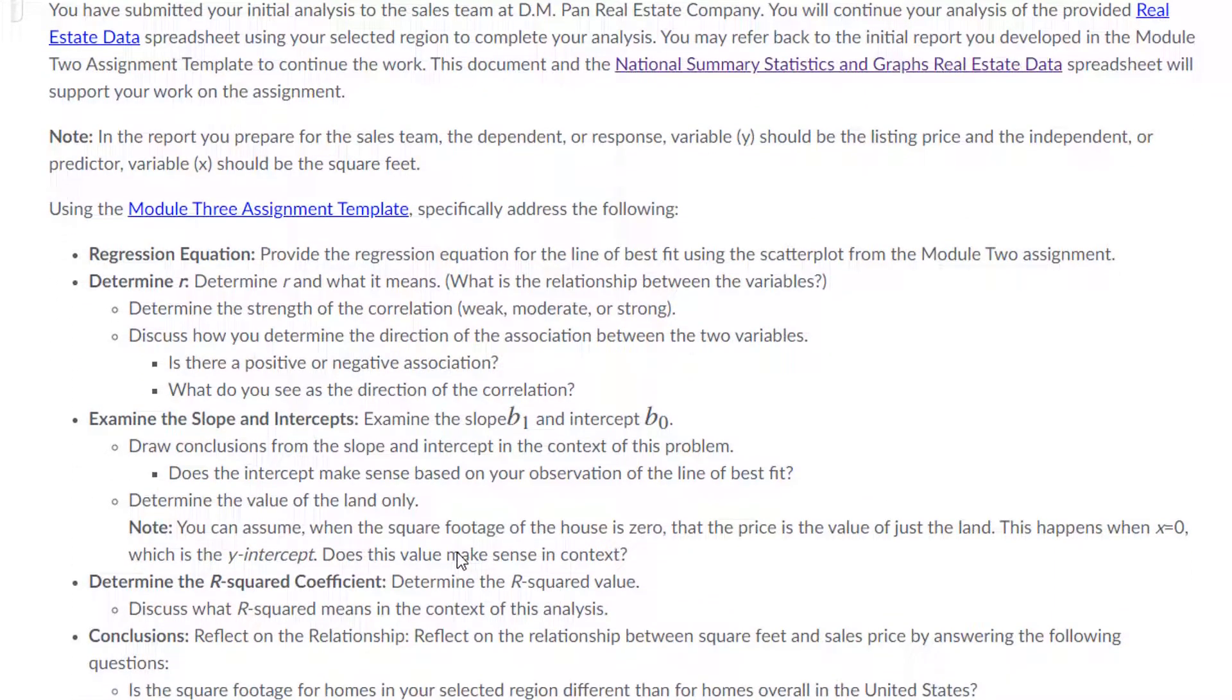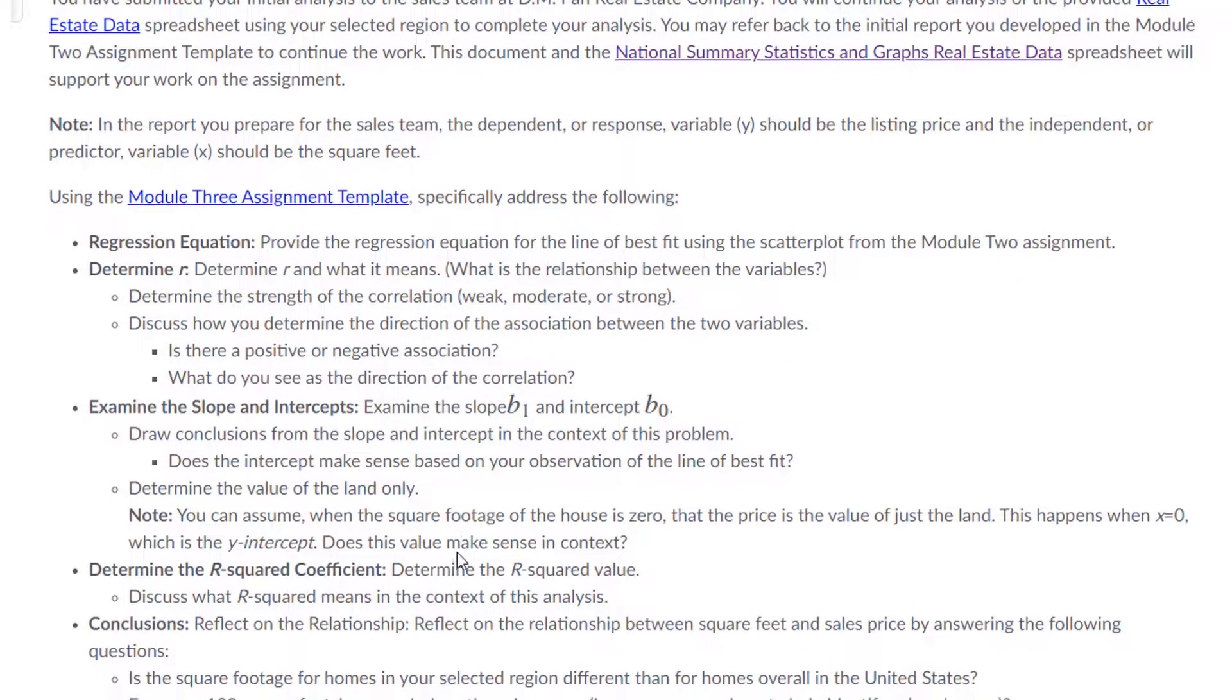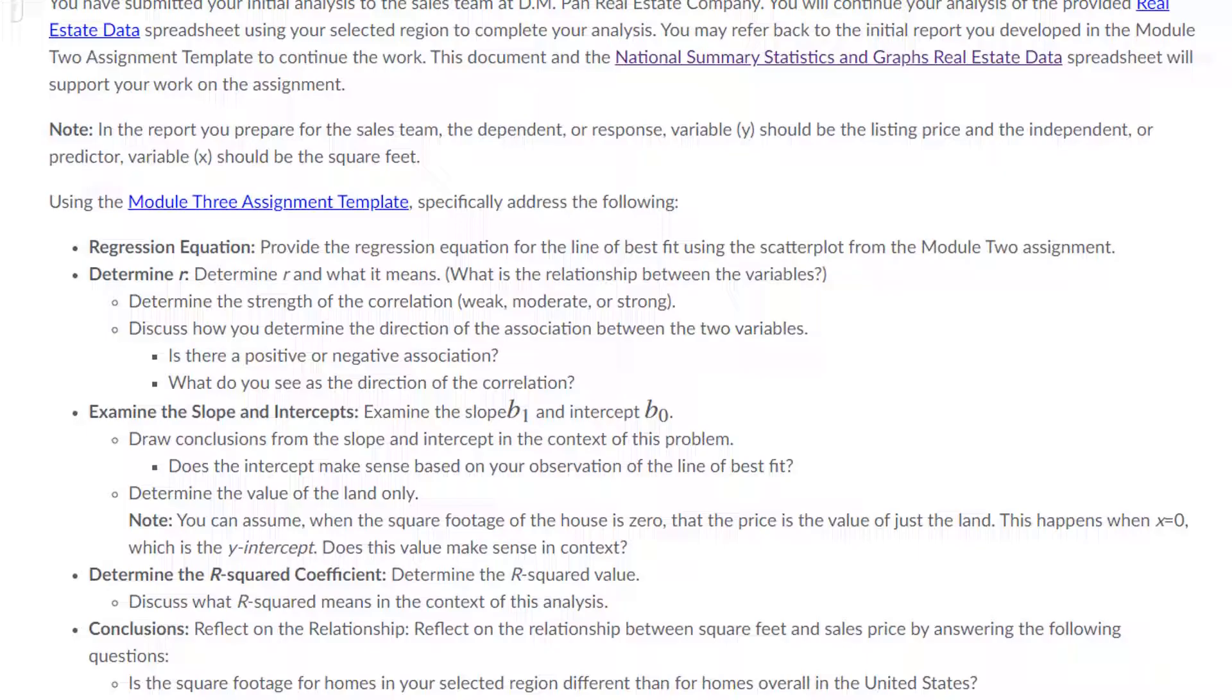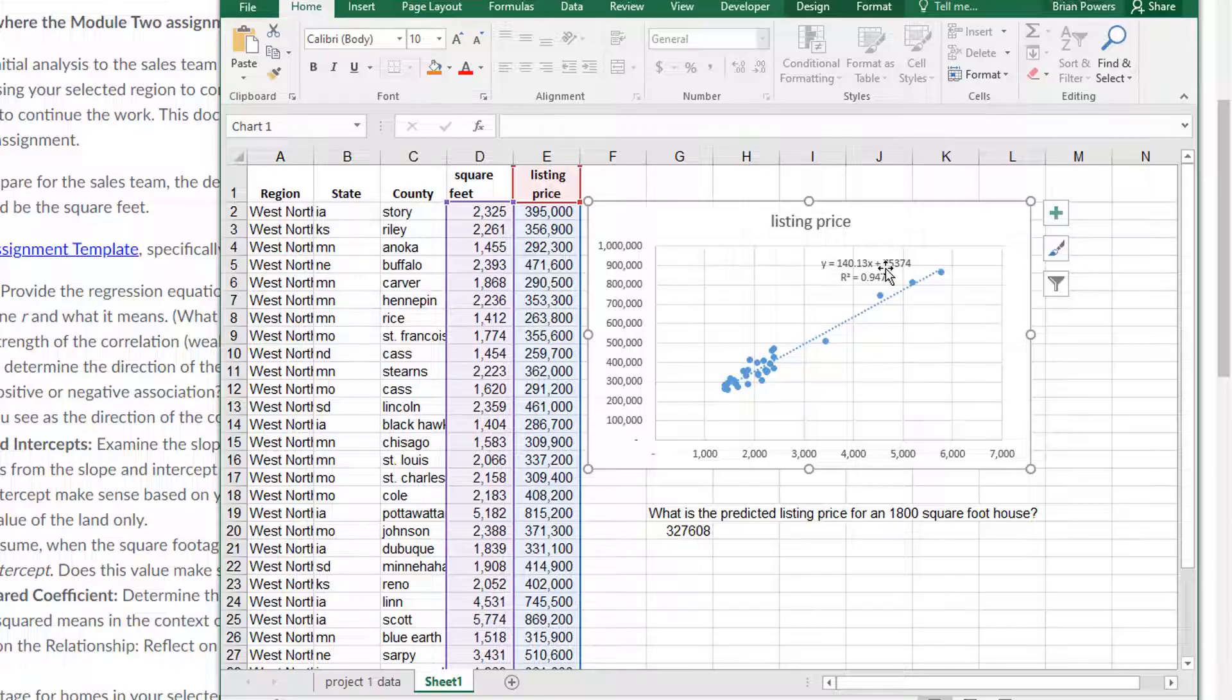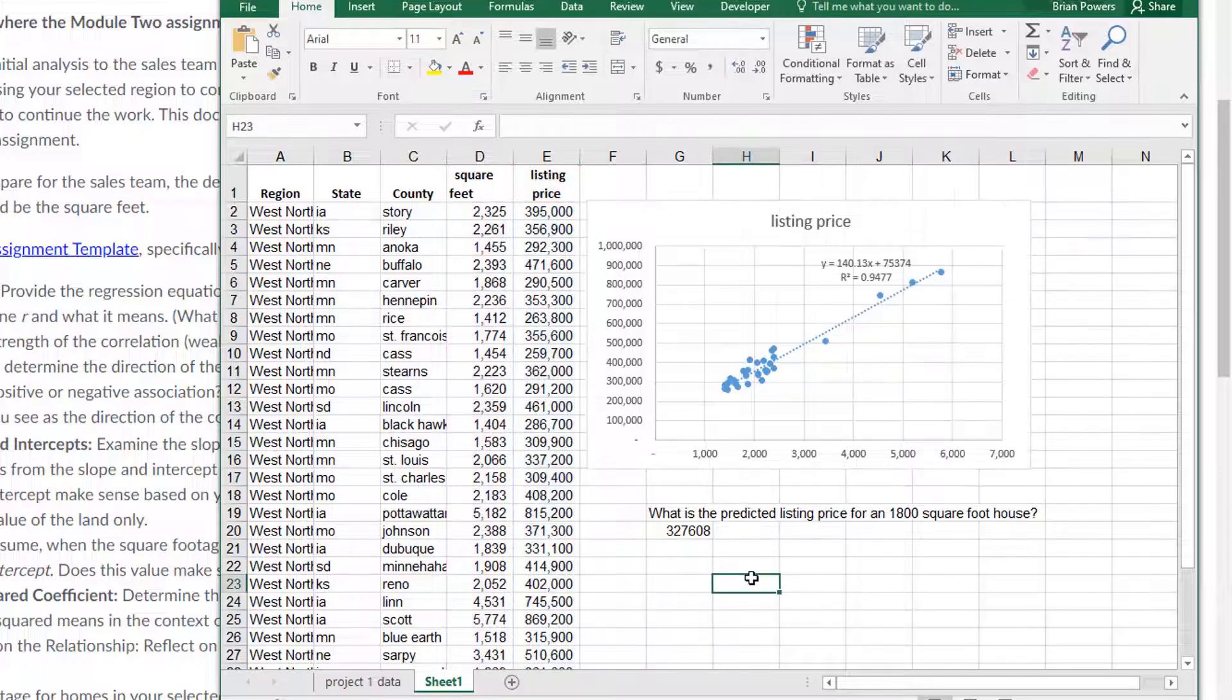Pretty much everything we have is already going to be straight from Excel. So you're asked first to state your regression equation, which, as you recall, we put onto our scatter plot. And so we have it right there. So we don't have to recalculate the equation. It's right there for us.